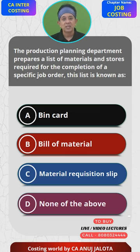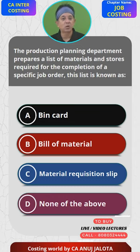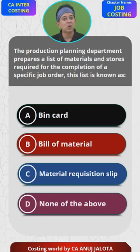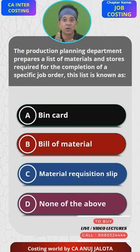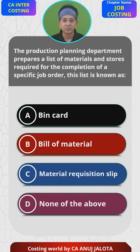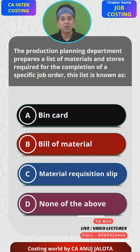Option B — bill of material. Whenever you get an order, you should always prepare a list of what material you require to complete that order. That list is called the bill of material. For example, if you are a fashion designer and you get an order to make a dress, you list how much cloth is required, how much thread, how many buttons — all those things go into the bill of material.